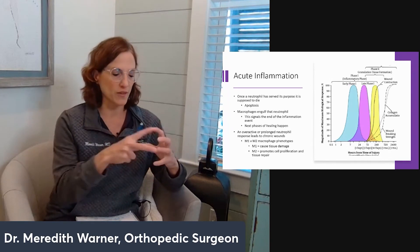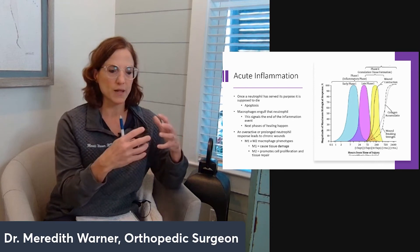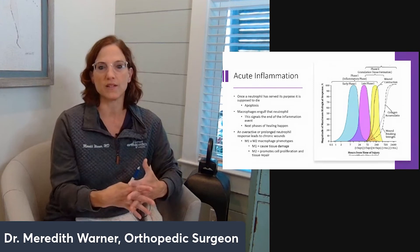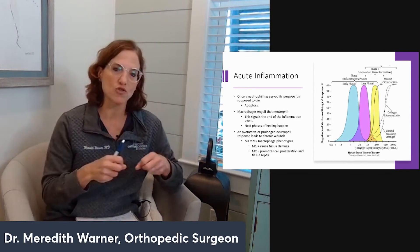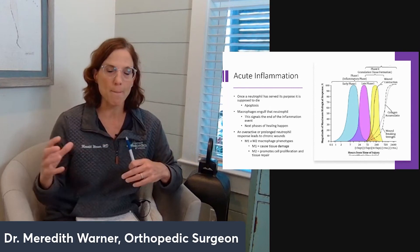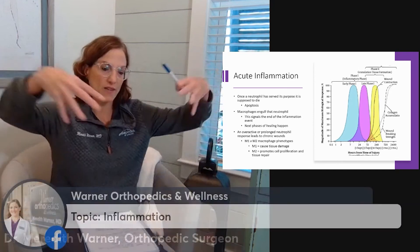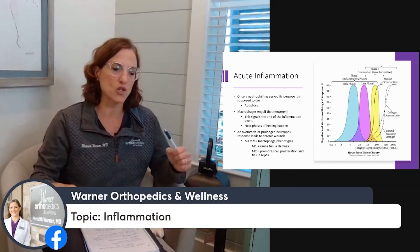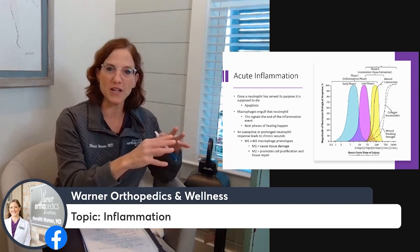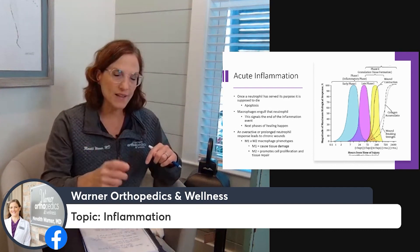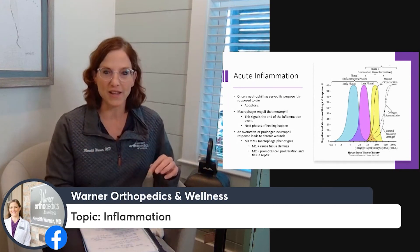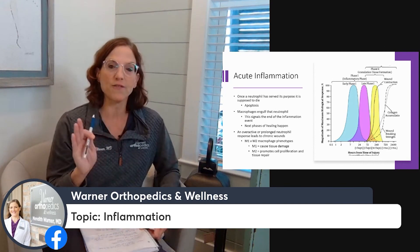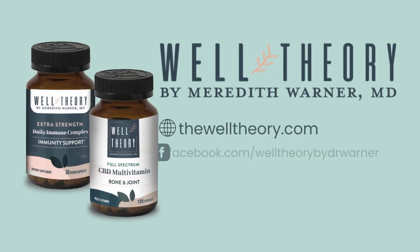Once a neutrophil has served its purpose — engulfed the pathogen and dropped the oxidative stress lysosome — it is supposed to die through programmed cell death, apoptosis. If it doesn't and continues producing bad proteins and releasing lysosomes everywhere, that is chronic inflammation. Normally a macrophage, a larger phagocyte, comes in and phagocytizes the neutrophil, cleaning up the cleaner-upper and signaling the acute inflammatory phase is done — let's start rebuilding tissue. If that doesn't happen, you don't enter the next healing phase, and you're left with a continuously inflammatory macrophage phenotype, which is what we don't want.